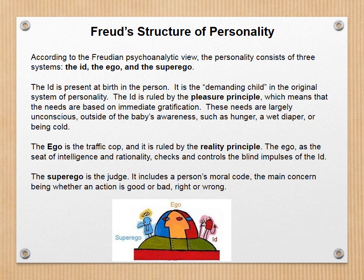Freud's structure of personality, which is so important in terms of psychoanalytic theory, consists of three systems. The id, which is present at birth, is the demanding child in the original system of personality. The id is ruled by the pleasure principle, meaning needs are based on immediate gratification. These needs are largely unconscious — outside of the baby's awareness — such as hunger, a wet diaper, or being cold. As we come out of the womb and start interacting with our families, we become aware of the ego, which is the traffic cop, ruled by our reality principle. The ego is the seat of intelligence and rationality, and it checks and controls the blind impulses of the id.